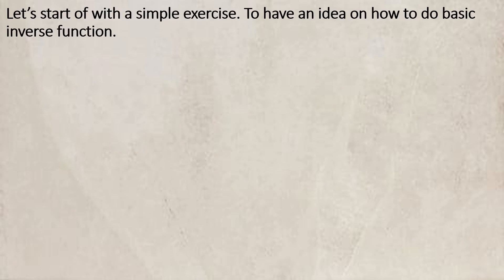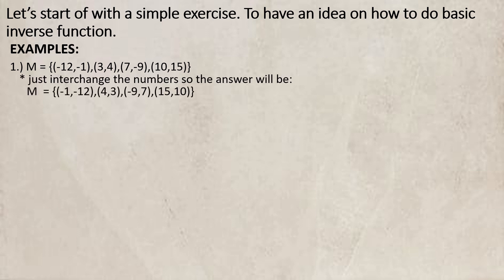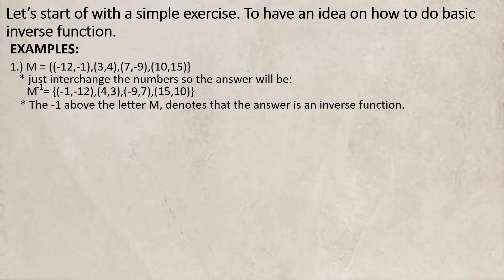Let's start off with a simple exercise to have an idea on how to do basic inverse function. Example number 1: M = {(-12, -1), (3, 4), (7, -9), (10, 15)}. Just interchange the numbers so that the answers will be: M⁻¹ = {(-1, -12), (4, 3), (-9, 7), (15, 10)}. The negative 1 above the letter M denotes that the answer is an inverse function.